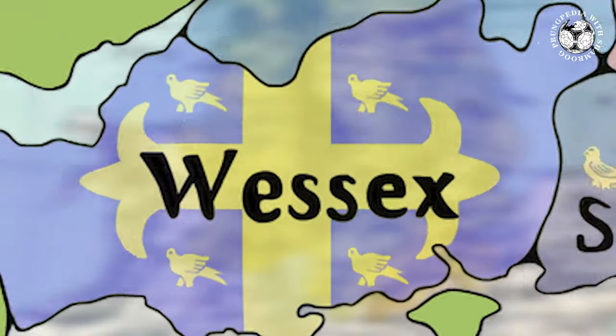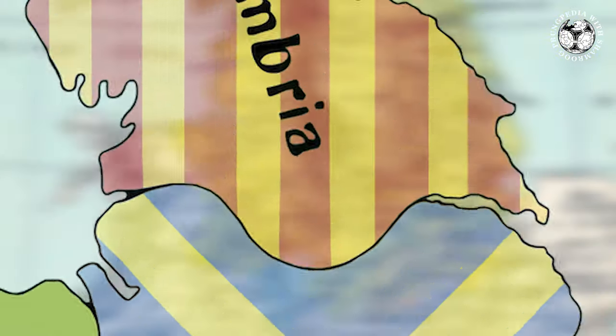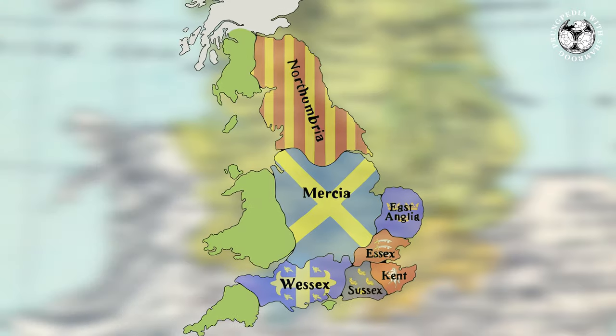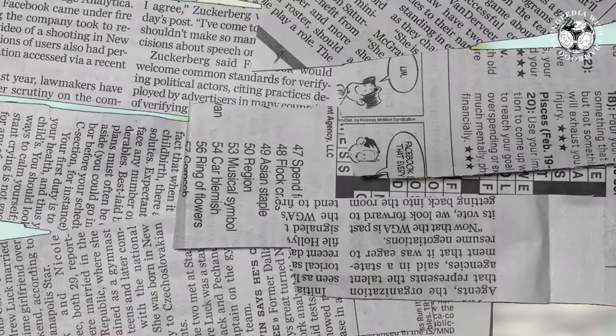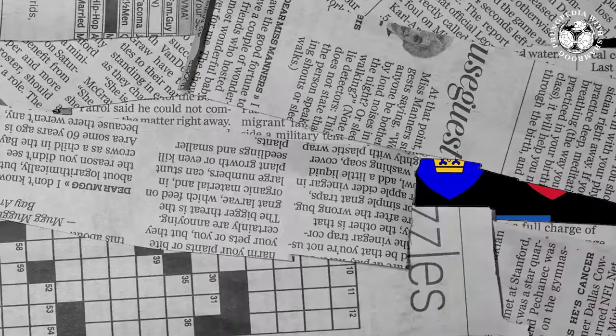Tujuh kerajaan itu: Wessex, Sussex, Essex, Mercia, Northumbria, East Anglia, dan Kent. Kalau dibedah: Wessex itu West Saxons, Sussex itu South Saxon, Essex itu East Saxon. Mercia ada di wilayah tengah berbatasan dengan orang-orang Wales. Northumbria ada di wilayah utara dekat Scotland, karena Scotland itu sejarah yang berbeda dengan orang-orang Inggris. East Anglia yaitu orang-orang Anglia yang berada di daerah timur. Tujuh Seven Kingdom ini disebut dengan Heptarki.